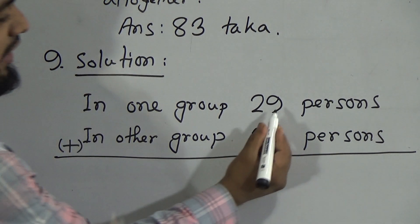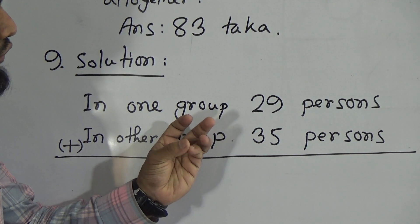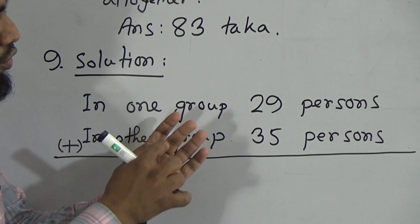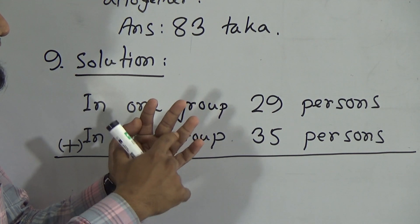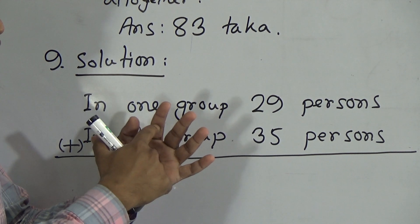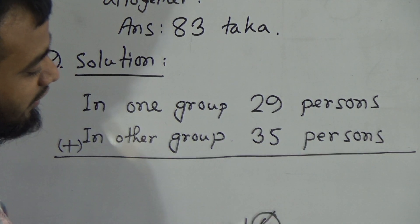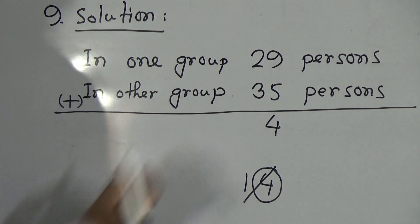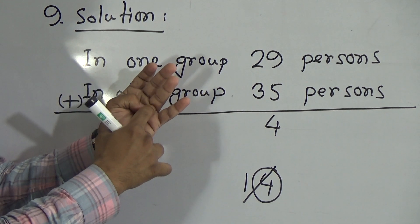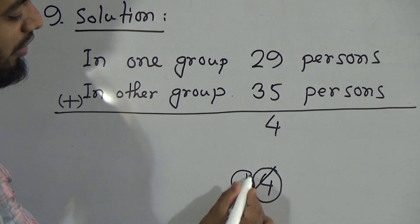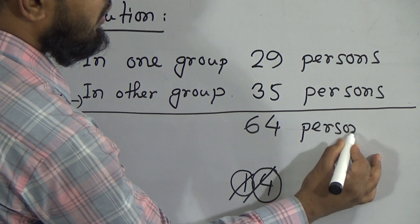We can add. First, starting from the one's place, we add 9 and 5. Counting up we get 14. So we write down only the one's place digit 4 in the one's place, and 1 is carrying in our hand. Now we add the ten's place digits: 2 and 3. Counting gives us 5, and with the carried 1 it makes 6. So it will be 6 in the ten's place. Therefore, 64 persons are there altogether in the two groups.